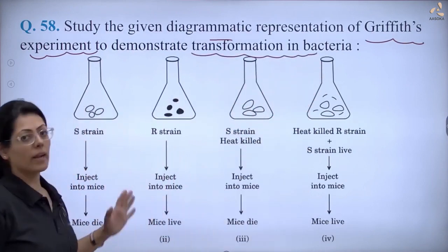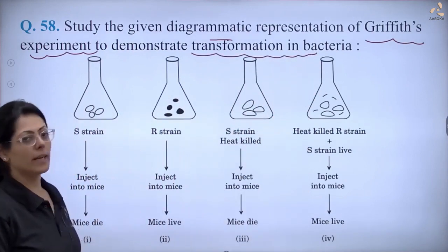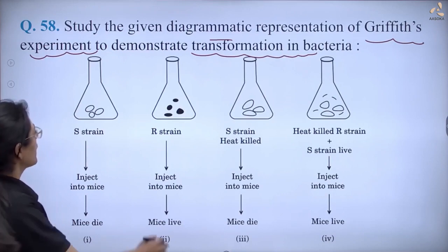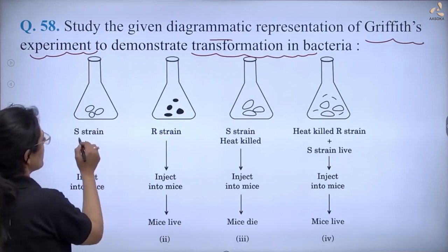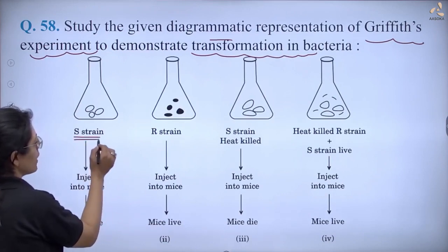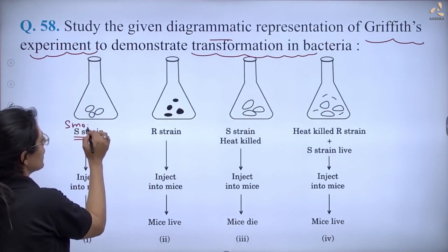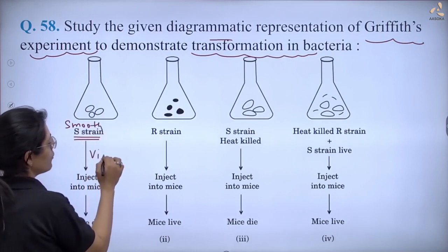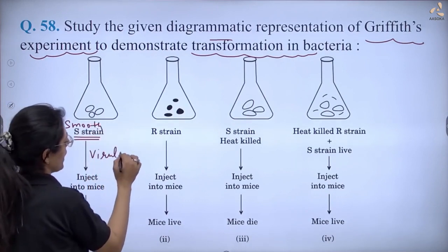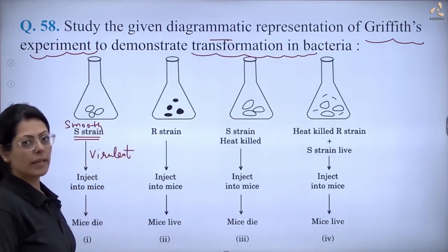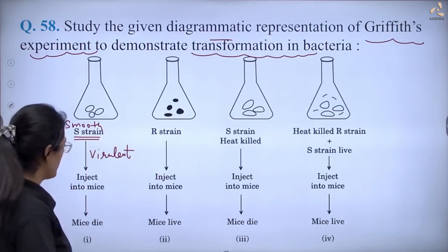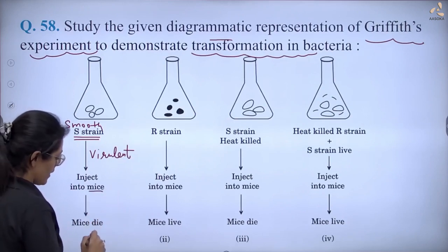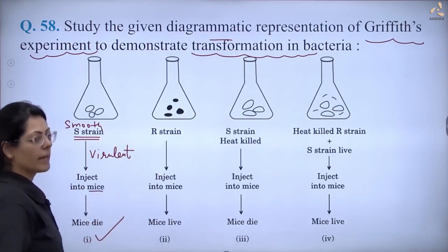From this diagram, we have to find which option is incorrectly represented. You can see there is S strain, or the smooth strain. What kind of strain is this? It is a virulent strain, meaning it will cause the death of the mice. So when it goes into the mice, the mice dies. This is correct.